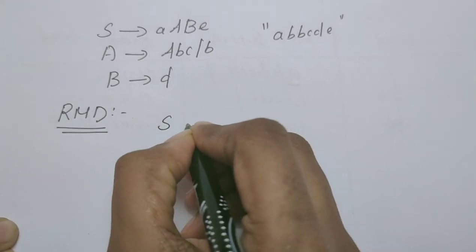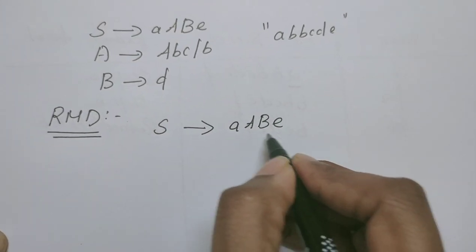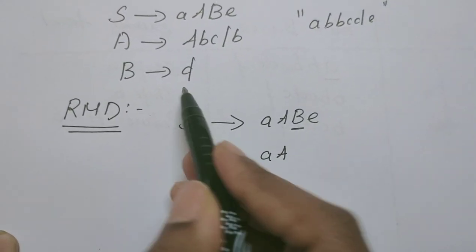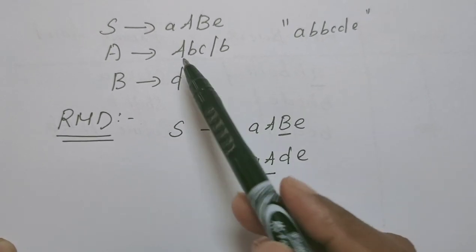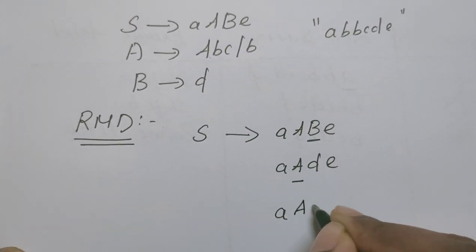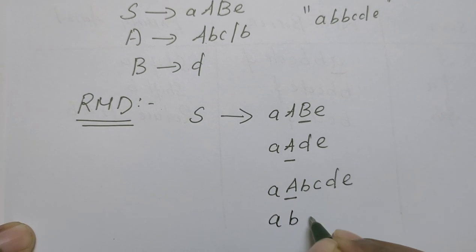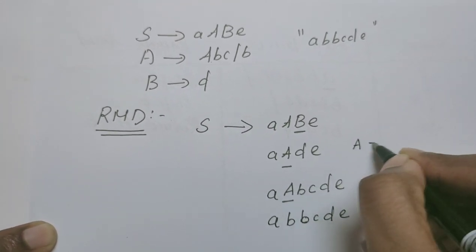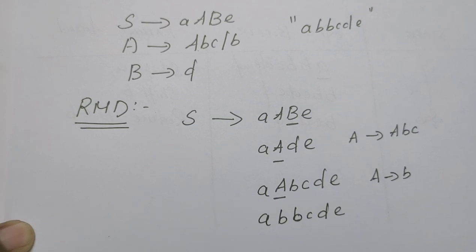Let us begin the derivation from the start symbol. The start symbol has only one option: A, A, B. In this production rule, choose the rightmost variable — B can be replaced by D. Then the only leftover variable is A. A has two options; we choose the first option to derive the string, so A is replaced by A, B, C, D, E. Finally, the remaining A is replaced by B, giving A, B, B, C, D, E. The rules used are: A is replaced by A, B, C; then A is replaced by B; and B is replaced by D.